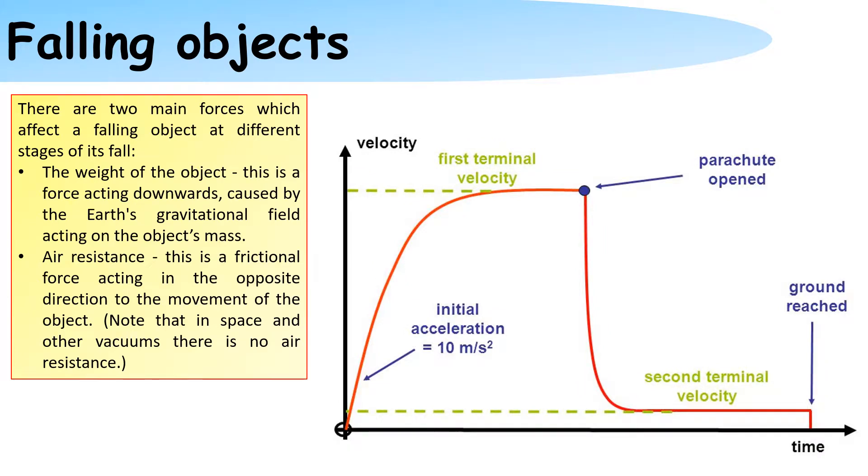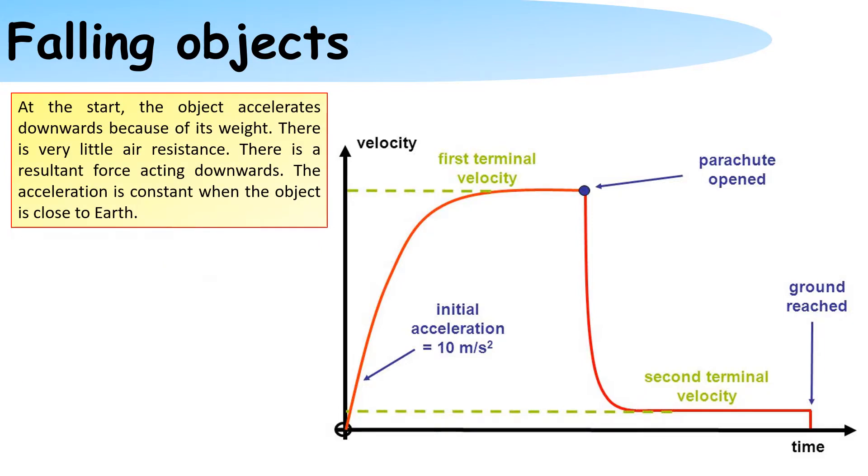We can see from this graph that when the person first jumps out, at the start the object accelerates downwards because of its weight. There is very little air resistance. There is a resultant force acting downwards. The acceleration is constant when the object is close to the Earth.